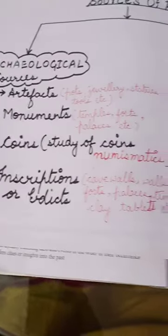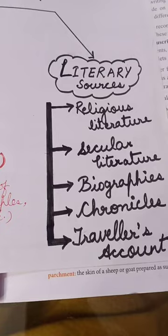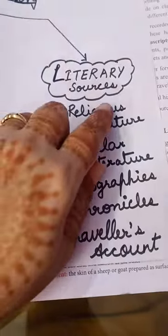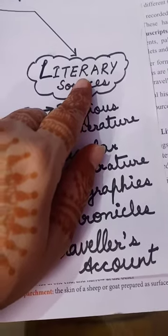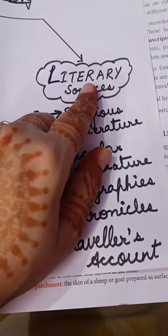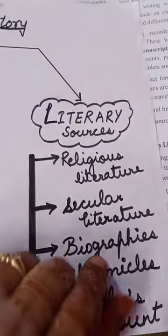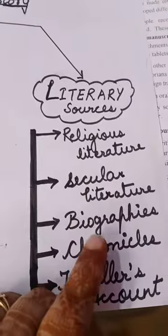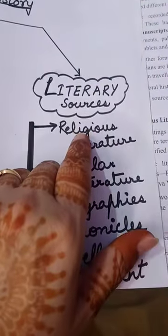This part we have finished. Now we will learn the new part, starting with religious literature — the first heading of literary sources. Literary sources means written sources, which are written in the form of books, biographies, travelers' accounts, chronicles, etc.